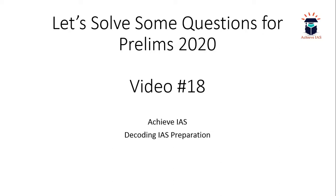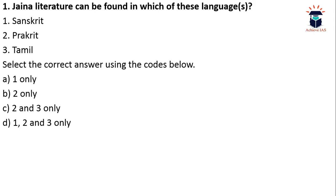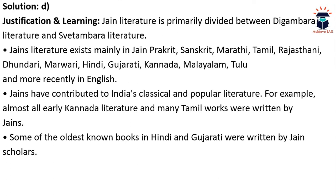The first question is from ancient India: Jain literature can be found in which of these languages — Sanskrit, Prakrit, or Tamil? We have to choose which of the codes is correct. The answer is D — all of the above. Jain literature is found in Sanskrit, Prakrit, and Tamil. It is primarily divided between the Digambara literature and Shvetambara literature.